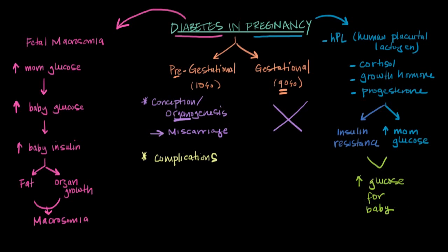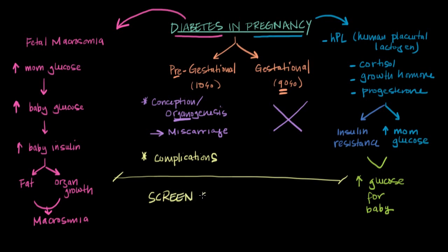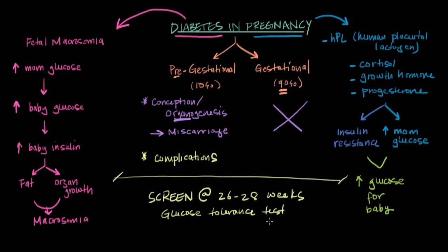Given that diabetes can cause all of these complications for mom and baby during pregnancy, we do our absolute best to screen for it. For women with a normal risk of diabetes, we do a routine screen around 26 to 28 weeks into the pregnancy. That screening test is usually a glucose tolerance test, where the woman is given a very specific amount of glucose and her blood glucose levels are measured at one, two, or three hours after consuming it. If her levels are above the normal range, she's found to be diabetic.